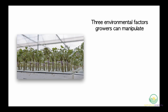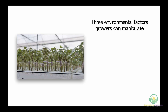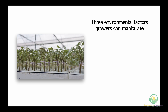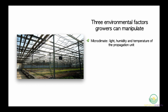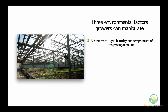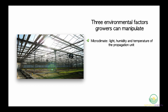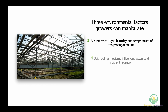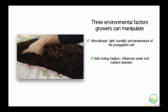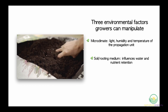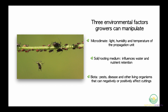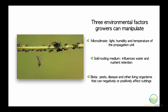There are three environmental factors that growers can manipulate to elicit the desired response in their cuttings. These are: one, the microclimate, which includes the amount of light, humidity and temperature of the propagation unit; two, the soil or rooting medium, which will retain water and nutrients in distinct ways; and three, pests, diseases and other living organisms that can affect the cuttings in positive or negative ways.